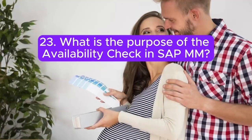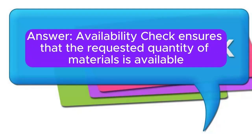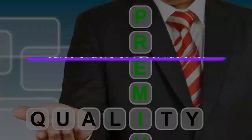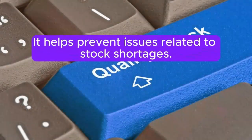Question 23: What is the purpose of the availability check in SAP MM? Answer: Availability check ensures that the requested quantity of materials is available before processing transactions like sales orders or reservations. It helps prevent issues related to stock shortages.